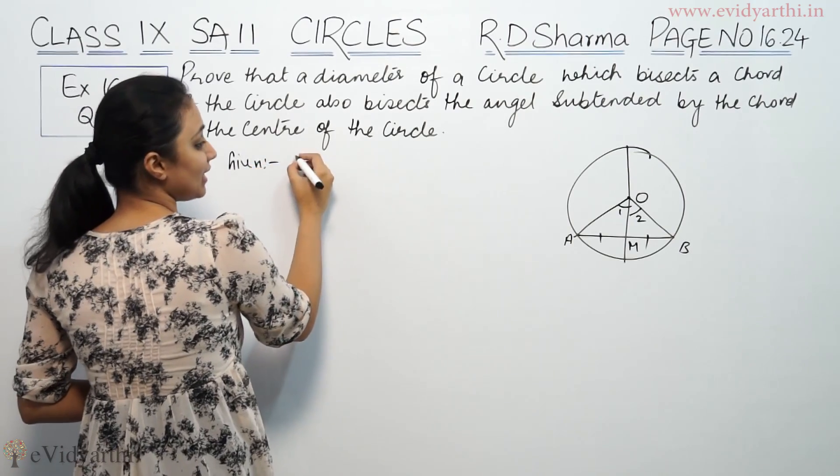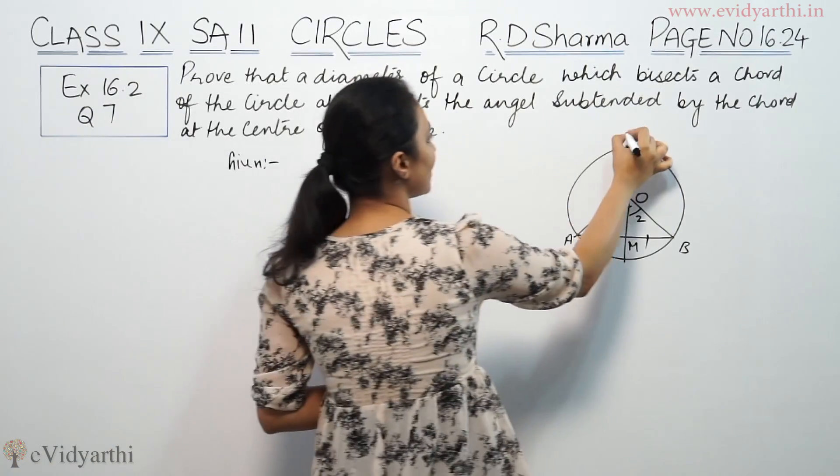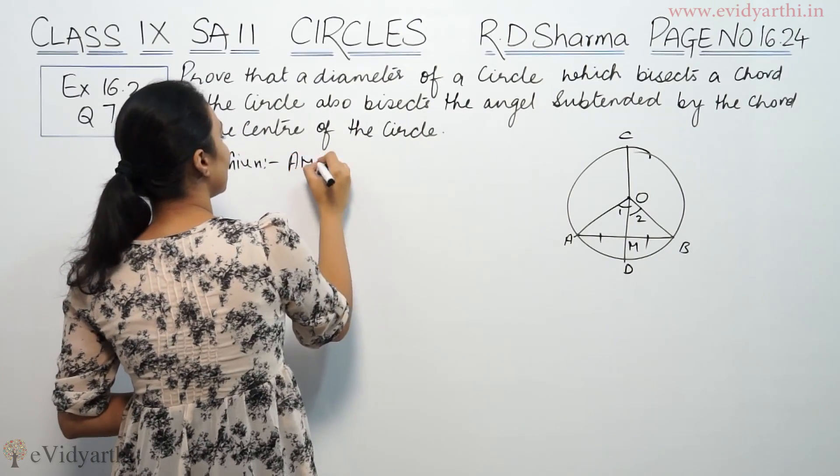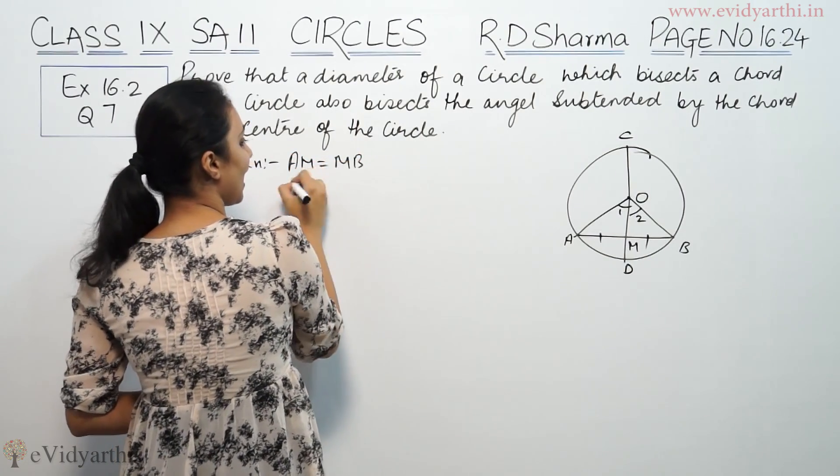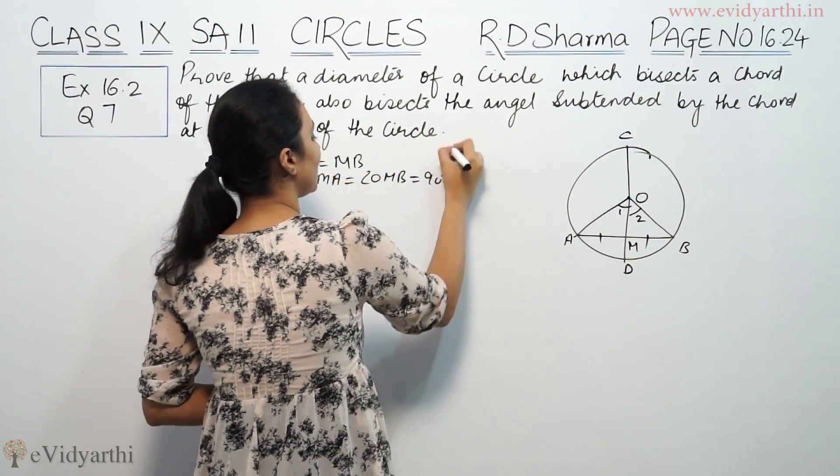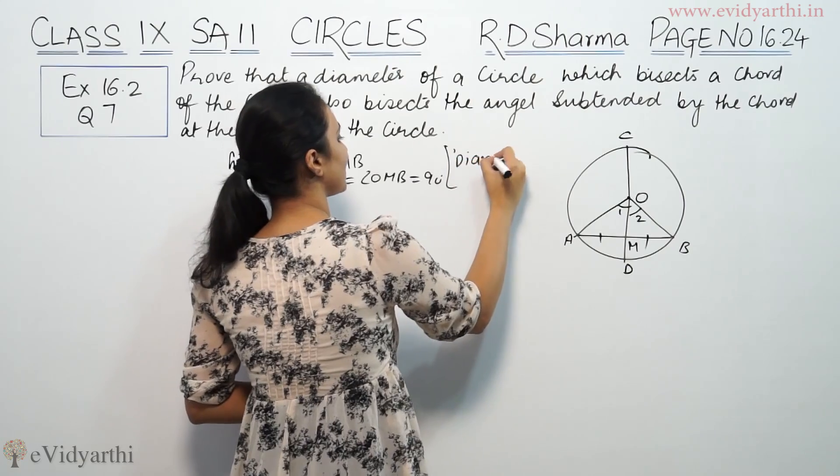So we have given that this is the diameter, suppose this is OD. We have AM equals MB, and angle OMA equals angle OMB equals 90 degrees, because we have given a diameter bisects the chord.